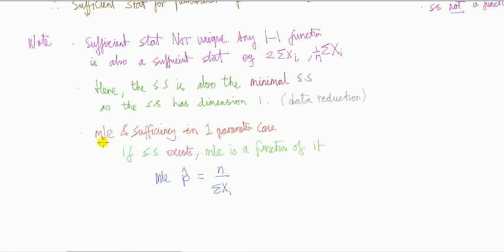Important thing is about the relationship between MLE and sufficiency. For this one parameter case, if the sufficient statistic exists, the MLE is a function of it. So for this problem for geometric, we can show that the MLE estimator equals n over sum of x_i's, and sum of x_i's we've already shown is a sufficient statistic.